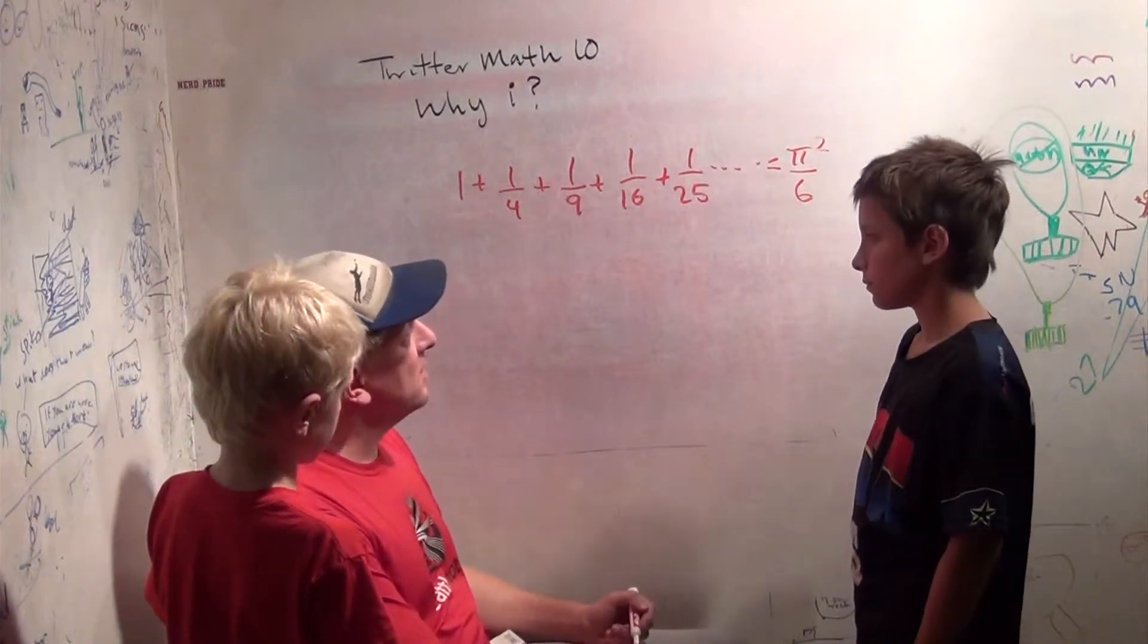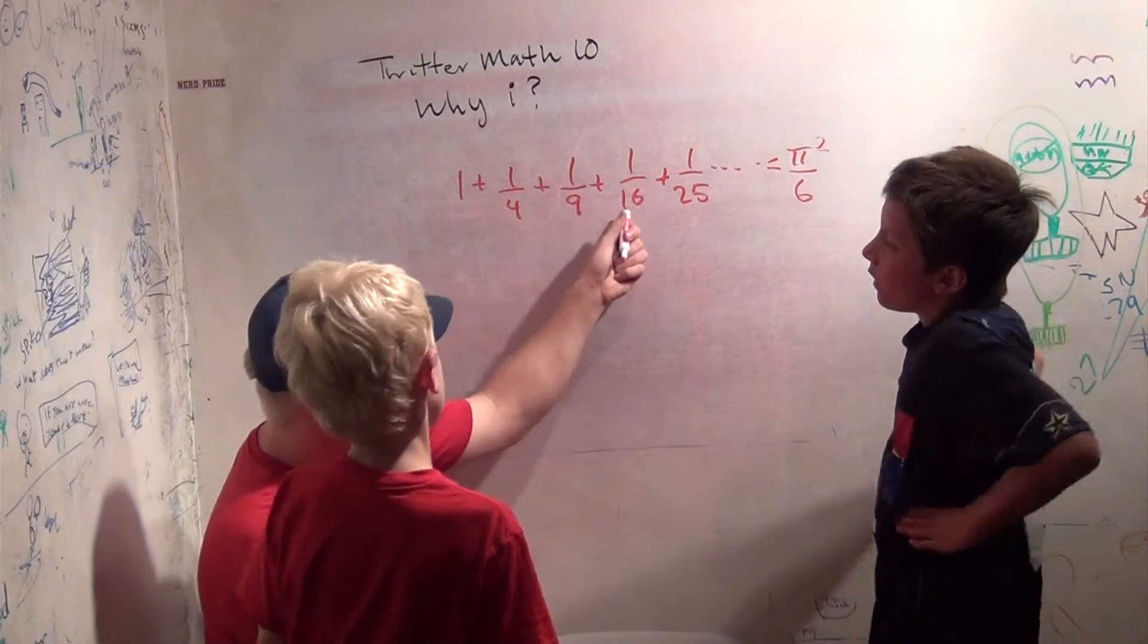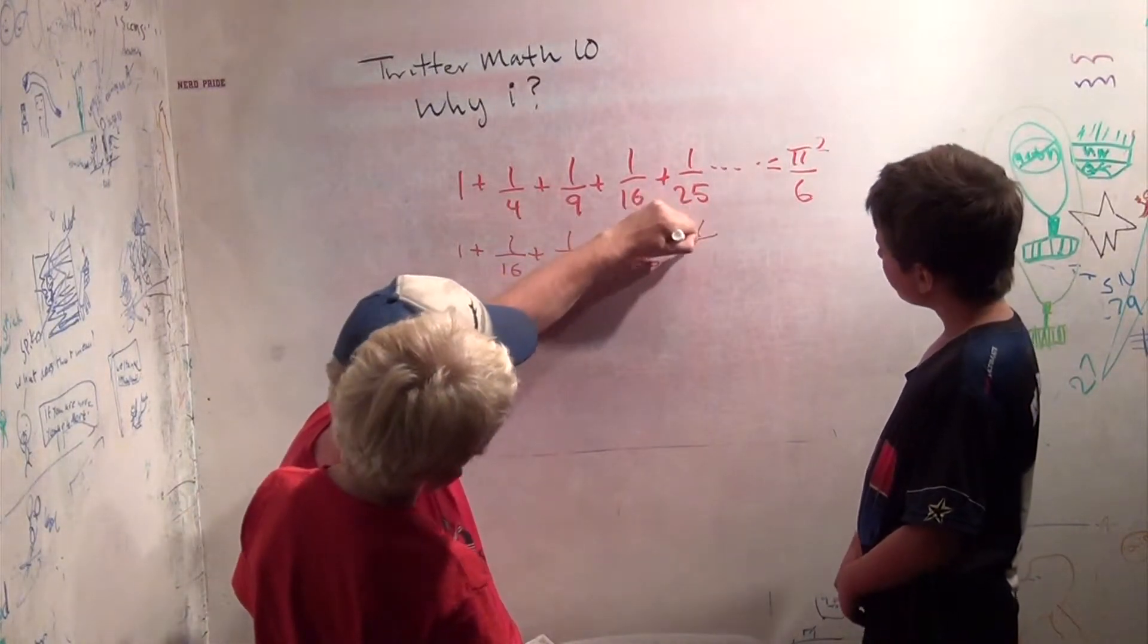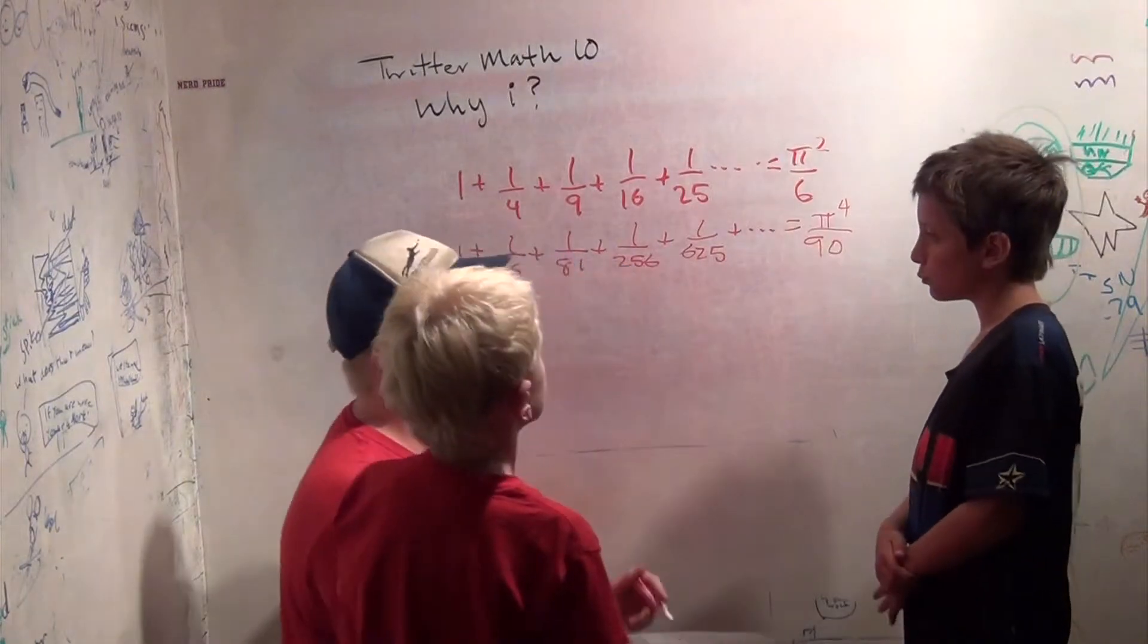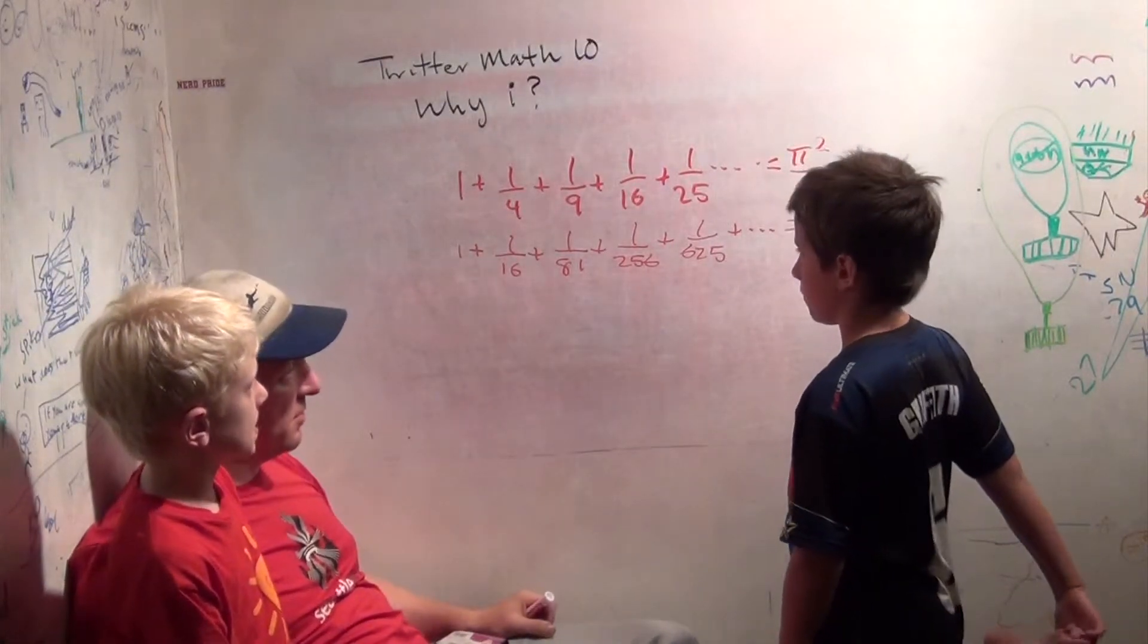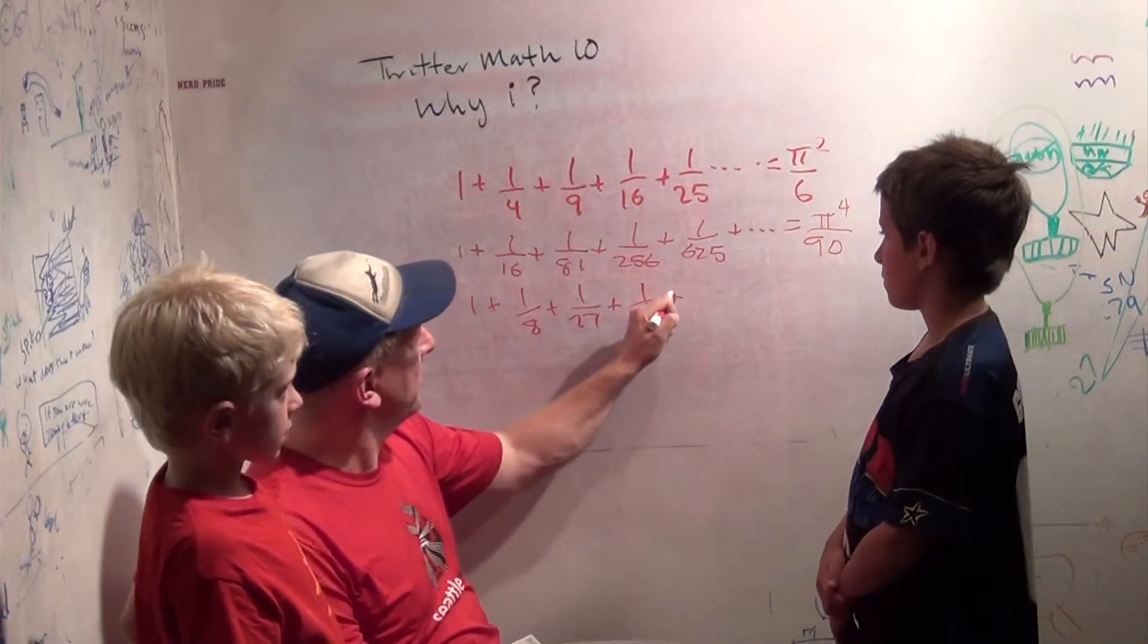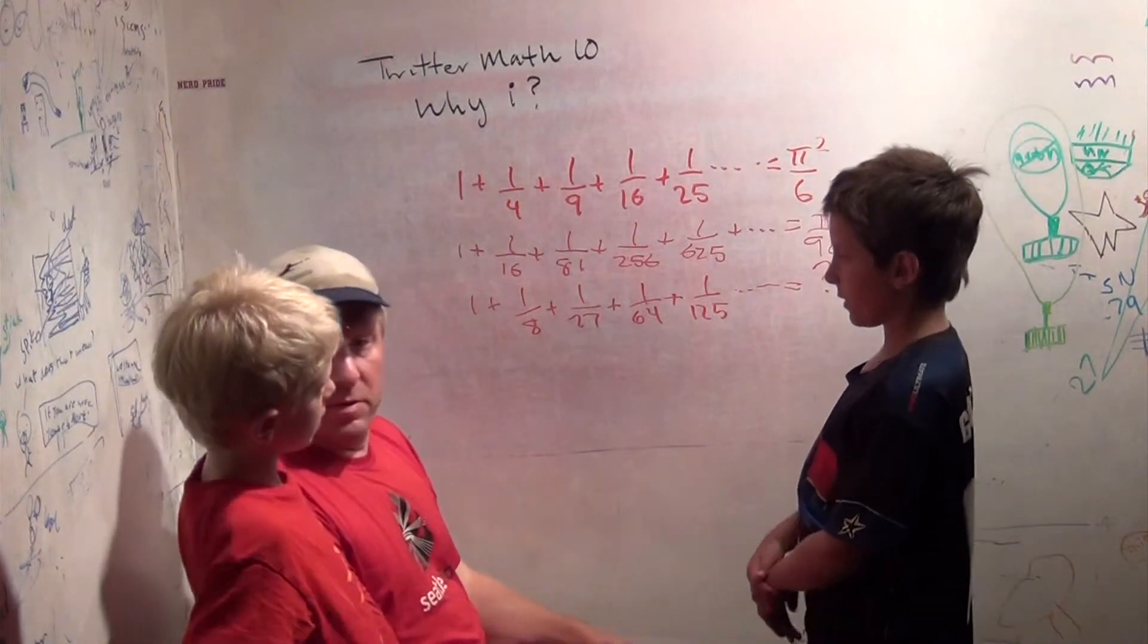And the math that you need to be able to understand to know how to sum these series like this involves complex numbers, even though all these are real numbers, right? Yeah. I'll show you another one. One plus one-sixteenth plus one over eighty-one plus one over two-fifty-six plus one over six-twenty-five. The fourth powers? Yeah. This is pi to the fourth over ninety. Hmm. And all the even powers have been figured out. Everyone, or somebody knows what they are. In fact, Euler figured them all out using complex numbers. Hmm.